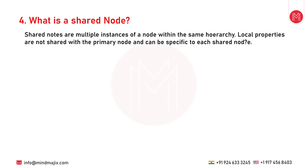The next question is: what is a shared node? Shared nodes are multiple instances of a node within the same hierarchy. The global properties for shared nodes automatically reference the values of the primary node and can only be changed at the primary node. Local properties are not shared with the primary node and can be specific to each shared node.